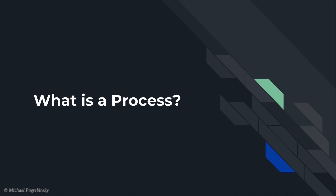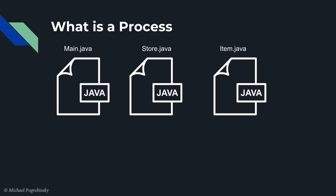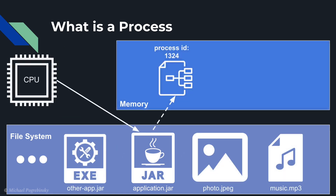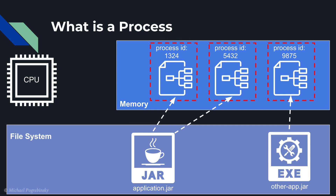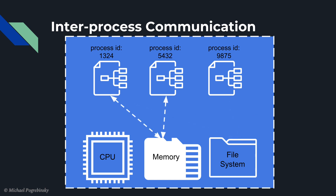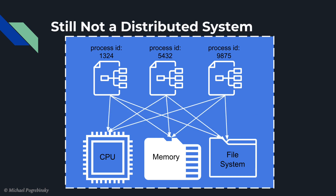First, let's have a refresher on what a process is. After we compile our application into an executable class or a jar file, it's stored on the file system just like any other text, music, or image file. When we launch the application, the operating system creates an instance of that application in memory. That instance is called a process. That process is entirely isolated from any other process running on the same computer, no matter if the other processes are instances of the same application or instances of different applications. Processes running on the same machine can communicate with each other through the network, the file system, and the memory through some advanced techniques the operating system provides. This, however, is still not a distributed system, because all the processes are running on the same machine — they are still sharing all their resources and cannot scale beyond the capacity of that particular computer.